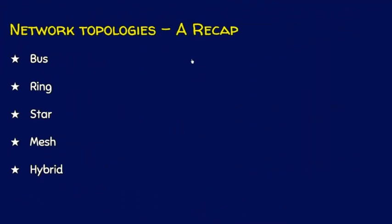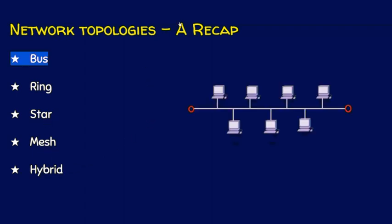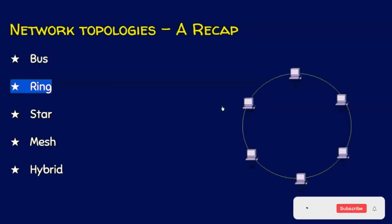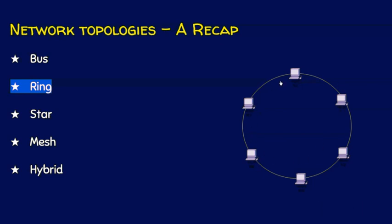We will now have a simple recap on network topologies. The network topologies are bus, ring, star, mesh, and hybrid. In a bus topology, we will have a common transmission medium and all data traffic will flow through this transmission medium only, and this traffic will be in both directions. In ring topology, this is like a bus topology but in a closed loop, and it is a unidirectional communication — all data traffic will flow in one direction only.